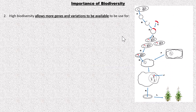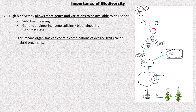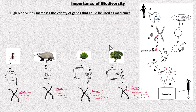Two: a lot of biodiversity allows for a lot of gene availability and many variations. We can use these genes for selective breeding, genetic engineering — also called gene splicing or bioengineering. We could take genes and combine them into other organisms, make recombinant DNA, make hybrid organisms. It's very good to have all these genes because we can mix and match to get all the desired traits into one genome, one organism.